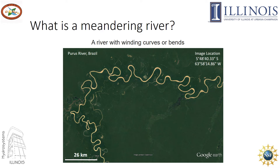First of all, what is a meandering river? It's a river with winding curves or bends. Meandering rivers can occur in many places. The one shown in the image is in Brazil — it's an alluvial meandering river. Alluvial refers to the fact that it has loose sediment like sand or gravel on its bed and banks. This river can change its path by eroding and depositing alluvium. Other examples of these types of rivers are the Mississippi River and the Amazon River.